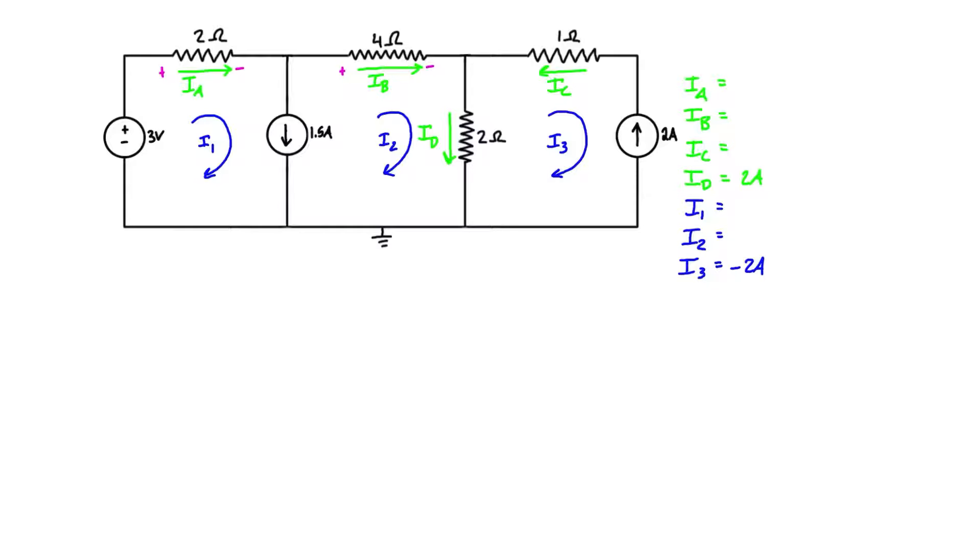Something else that is helpful to label on here is our polarities as well, based on the way that we assumed the currents to be flowing. This will be used later in the KVL. Now in a regular mesh analysis problem that doesn't have a current source between two branches, the next step would be to find i1 and i2 by doing KVL around each loop. But because there's a current source in between them and we can't use Ohm's law to determine what the voltage is across this element, we need to basically redraw the circuit without this element.